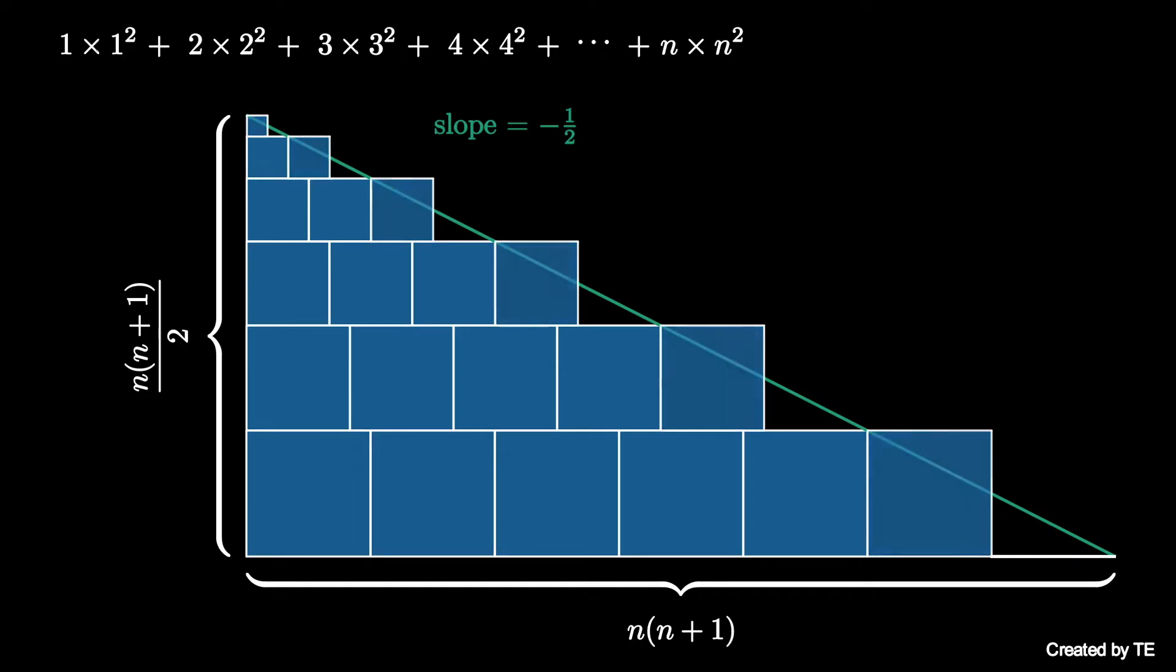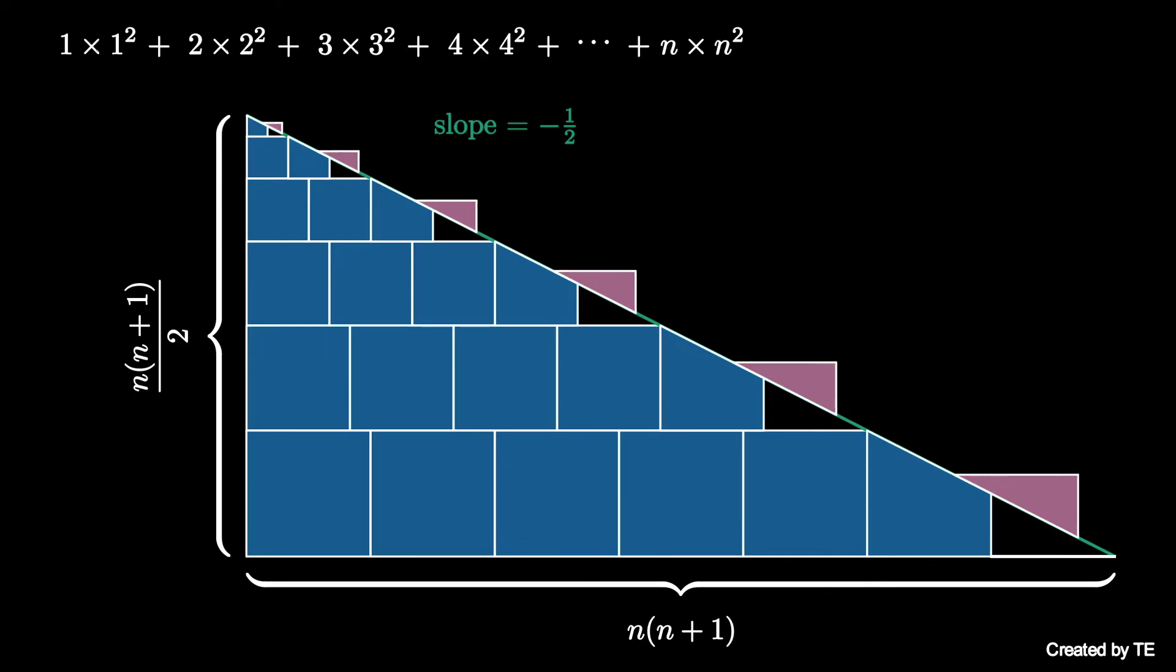The small triangles excluded from the large triangle by the line can be shifted and rotated to fill in missing gaps in the large triangle.